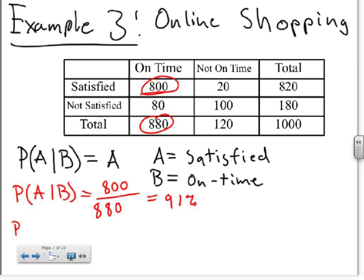Now, if we just figure out the sole probability of a customer being satisfied, it's just P of A, so you're looking for when they were satisfied, which is again right here and here. So you have 800 plus 20 over the total number of customers, right here, 1000, which gives you 82%. Since these numbers are different, you can see that they're not independent. If the events would have been independent, the percentages would have been the same.